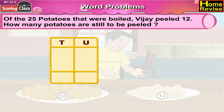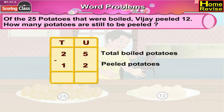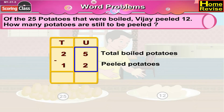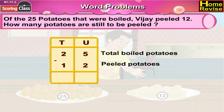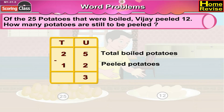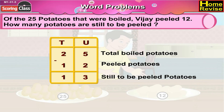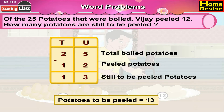Let us arrange them under tens and units. Under units, we will write 5 and 2. Under tens, 2 and 1. 5 minus 2 is 3. 2 minus 1 is 1. So, potatoes which are still to be peeled are 13.